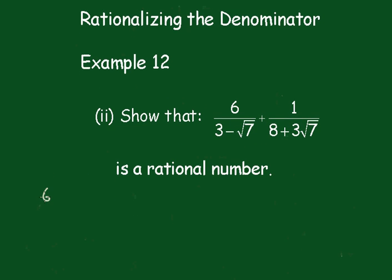So I've got 6 over 3 minus root 7, and we'll multiply that by 3 plus root 7 over 3 plus root 7. And that will give me 6 outside of 3 plus root 7 over, and that's a 9 minus 7 is a 2.